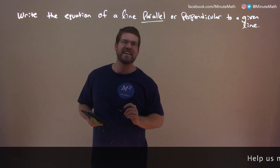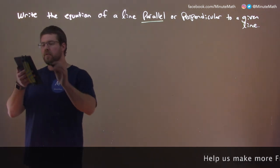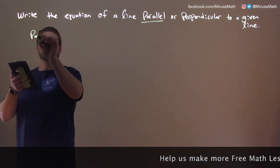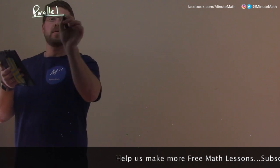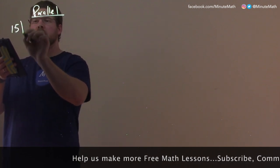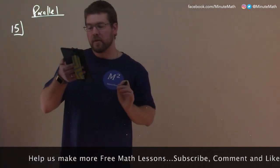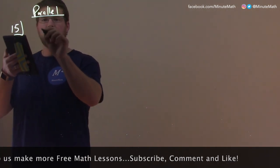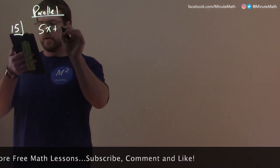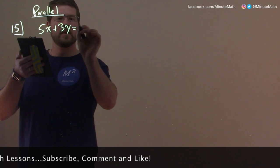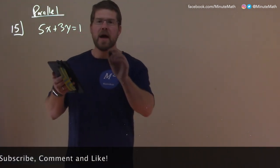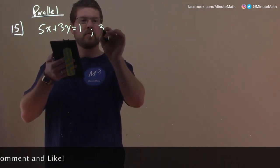The first one we're going to deal with here is parallel. So let's talk about parallel here. Number 15. We want to find the equation of a line parallel to 5x plus 3y equals 1, and it passes through the point 3, 5.